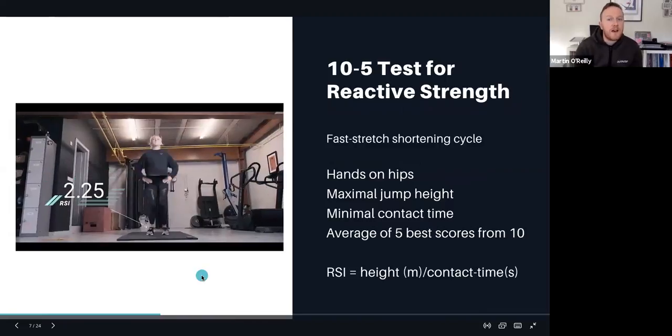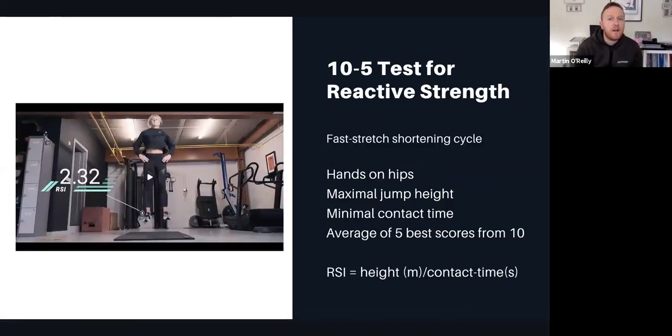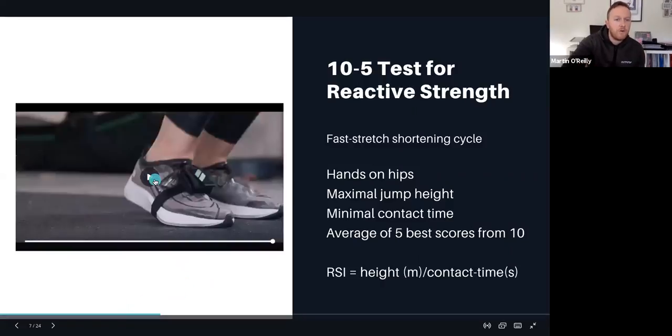The next thing we looked at was the fast stretch shortening cycle via repeated hop tests, 10 hops on the spot, taking the average of the best five reactive strength. A short contact time and a good height indicates a strong reactive strength performance.